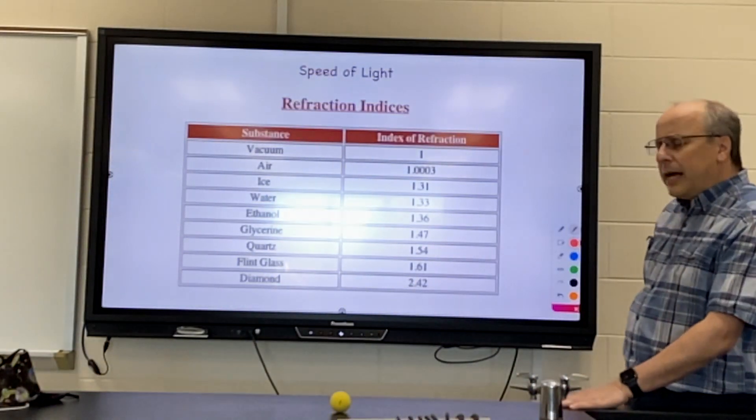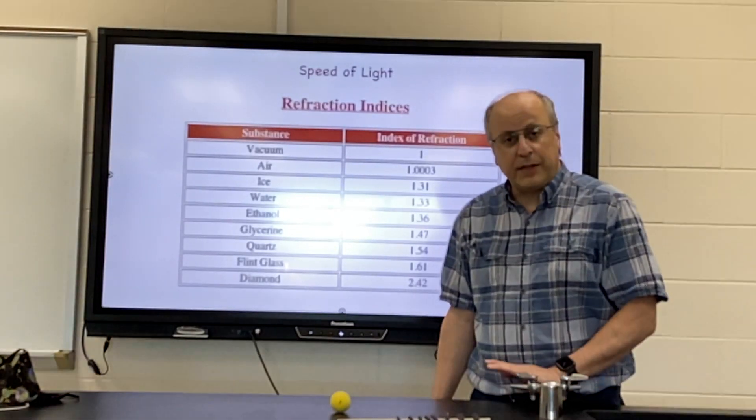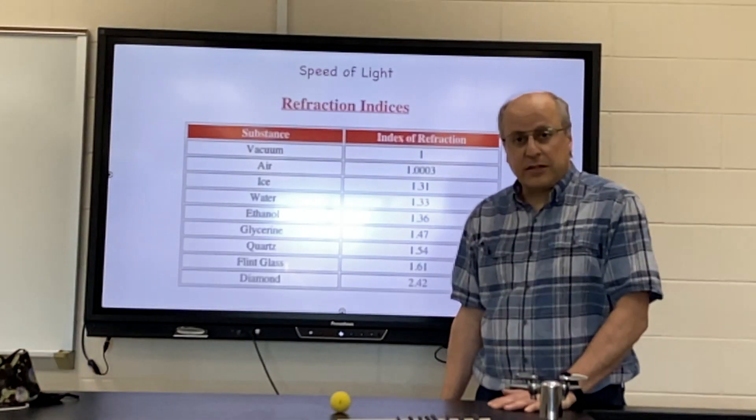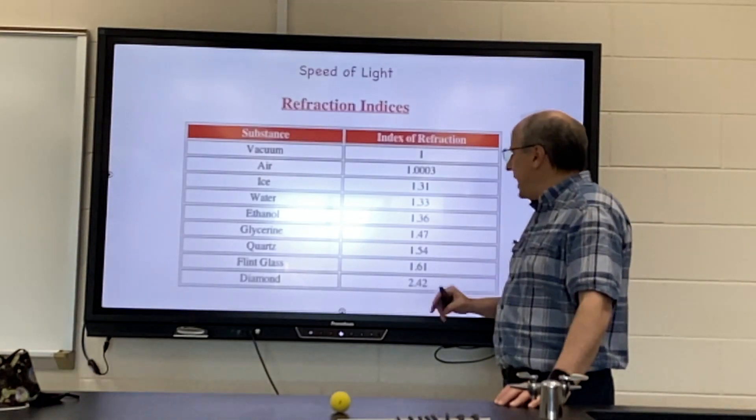Okay, I want you to realize that all the problems we have done so far, we have assumed that the light was traveling through space, and that is not always the case. Sometimes light might be traveling through water, or glass, or diamond.